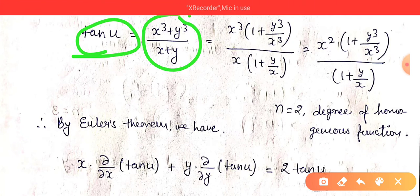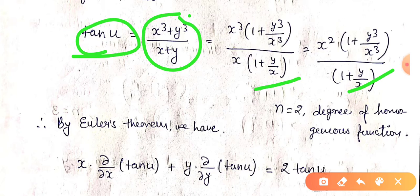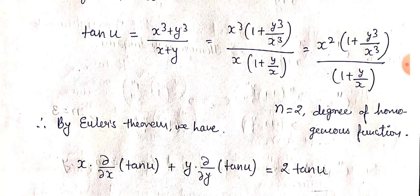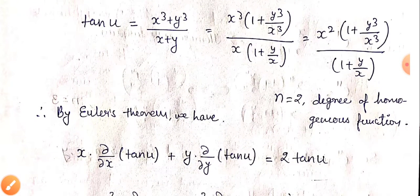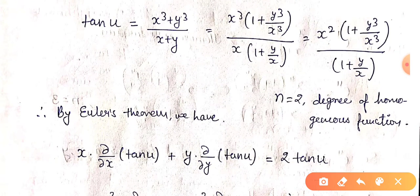So tan(u) is our homogeneous function of degree 2. Now we apply Euler's theorem to this homogeneous function.